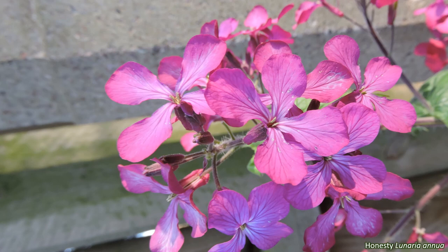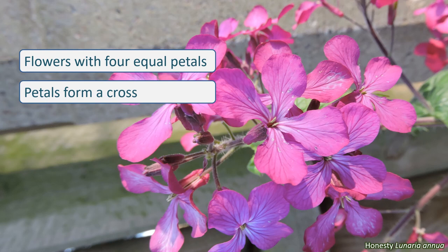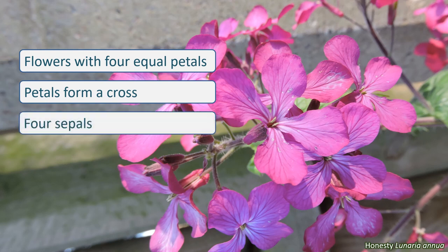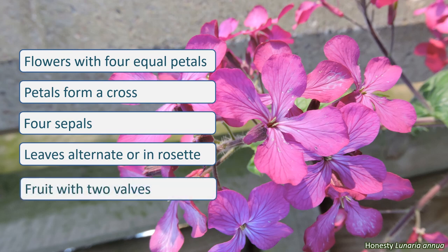So, a plant with flowers that have four equal petals in the shape of a cross or square, with four sepals, and which has alternate leaves and fruits with valves, is most likely to be in the Brassicaceae.